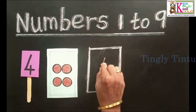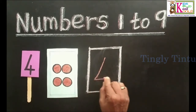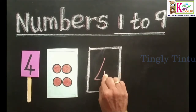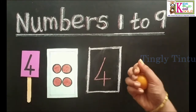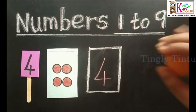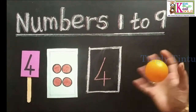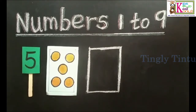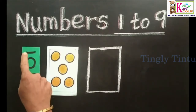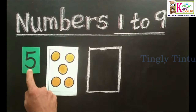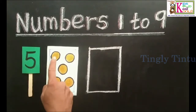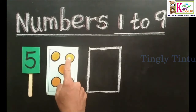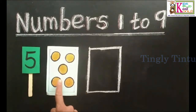Slanting line, sleeping line, standing line. 4. Standing line, right semicircle, sleeping line. 5. Come down. 1, 2, 3, 4, 5. 5 candies.